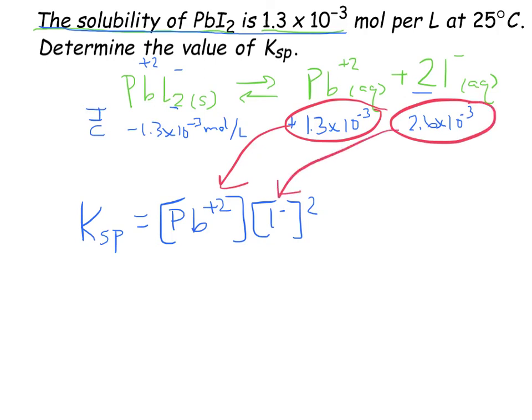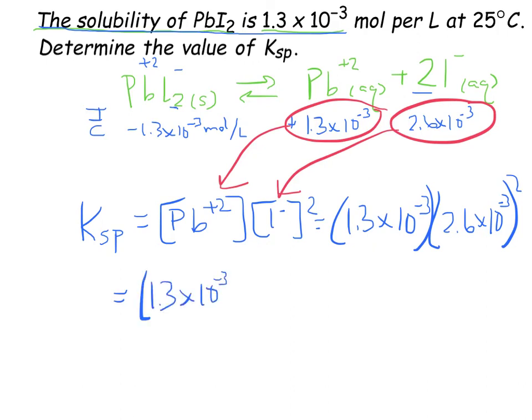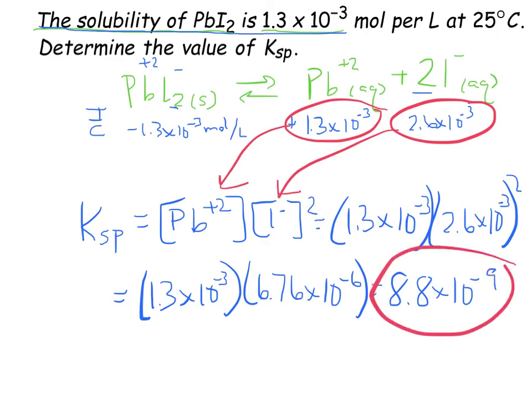So, we have Ksp equals 1.3 times 10 to the negative 3rd times 2.6 times 10 to the negative 3rd squared. So, let's simplify that. It's 1.3 times 10 to the negative 3rd times 6.76 times 10 to the negative 6. Multiply those together and I get 8.8 times 10 to the negative 9. And that is my final answer. Great job!